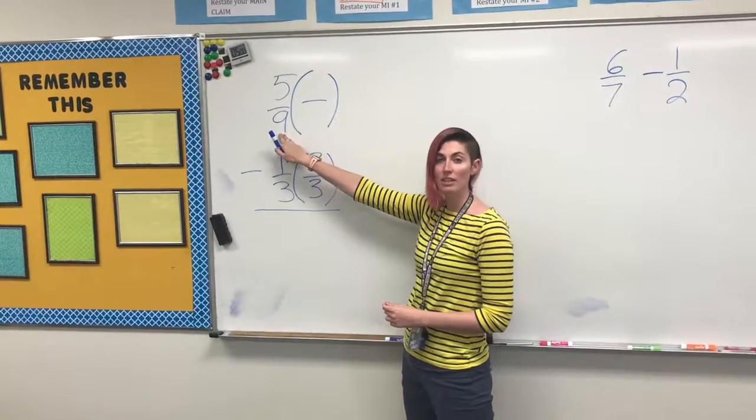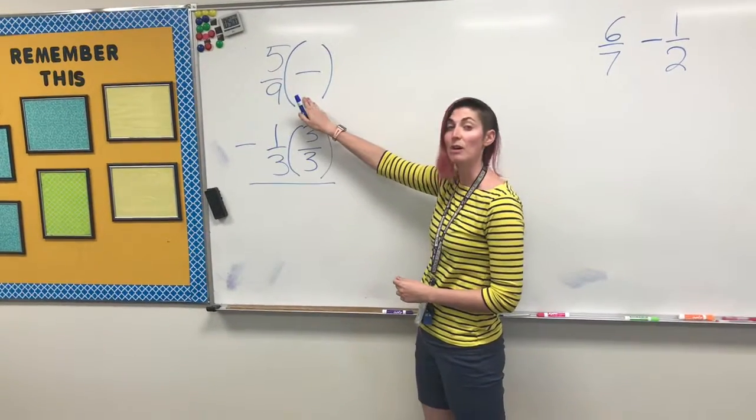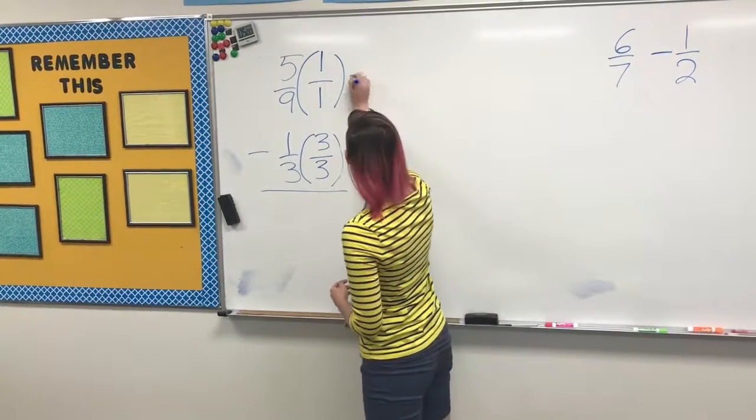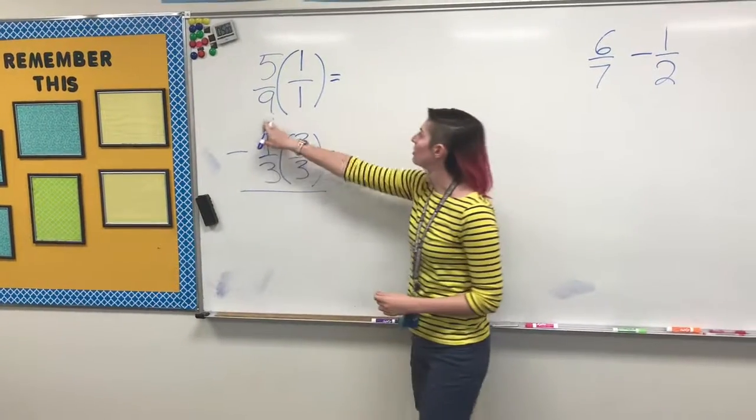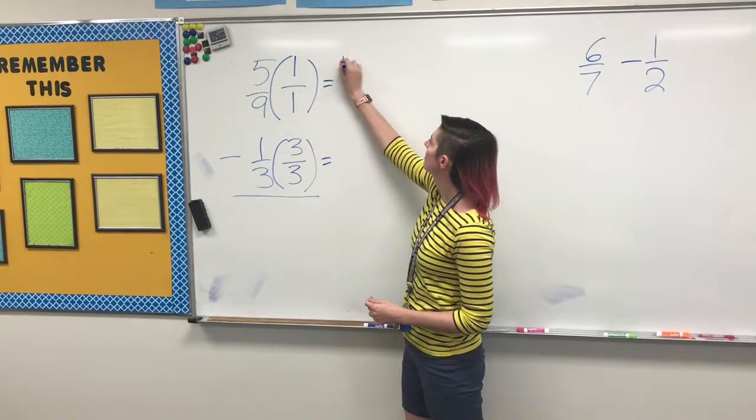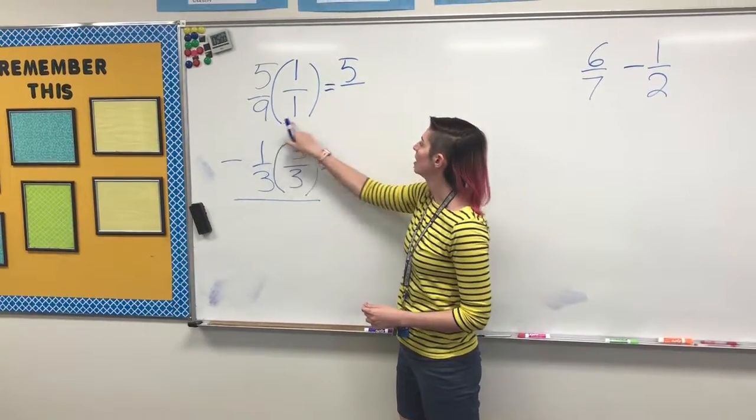We don't want 9 to change, so we're going to multiply that by 1, since any number times 1 equals itself. When you're multiplying, you're multiplying straight across. 5 times 1 is 5, 9 times 1 is 9.